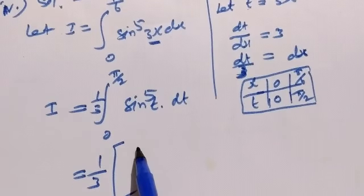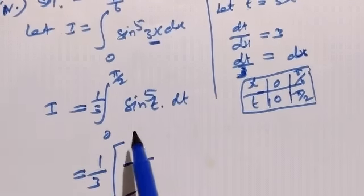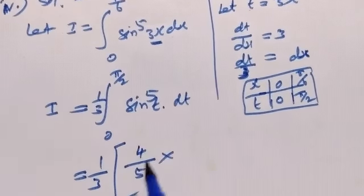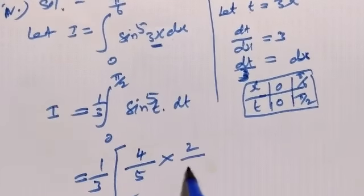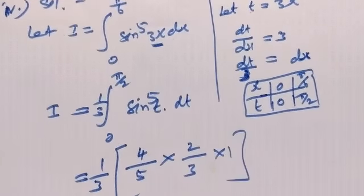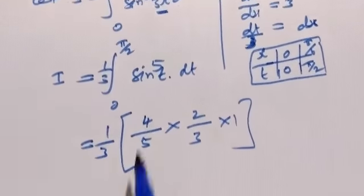This equals (1/3) times (4/5) times (2/3). Four times two is eight, three times three is nine, so it simplifies.